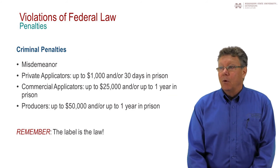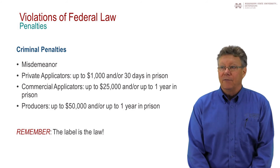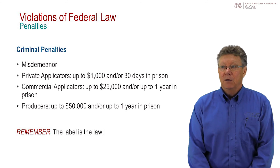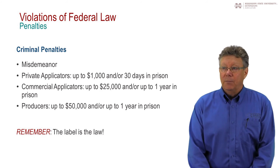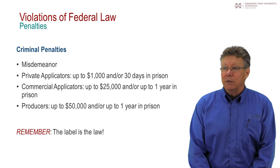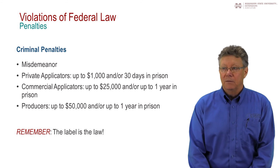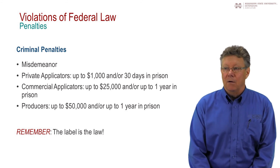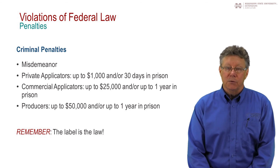Criminal penalties range from up to $1,000 for private applicators to $25,000 for commercial applicators and $50,000 for producers of agricultural commodities. Jail time can also be added to the penalty — there are people in jail today as a result of grossly negligent violations of pesticide sales or use. So remember: the label is the law, whether the product is for home and garden use or for professional use.